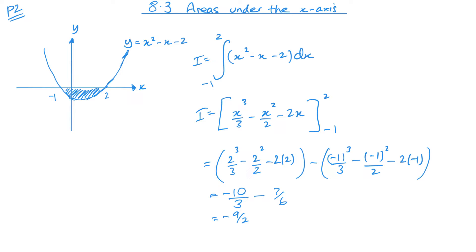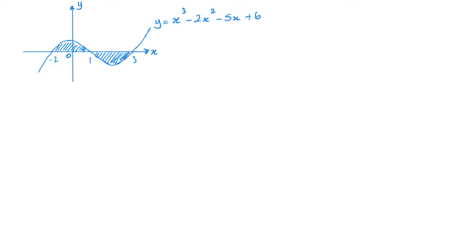And since the area cannot be negative, this area is going to be a positive 9 over 2. So the shaded area equals 9 over 2. Now, that's perfectly fine when I have a question like this. However, what if I have to find an area like this? This is where I have to be really careful.